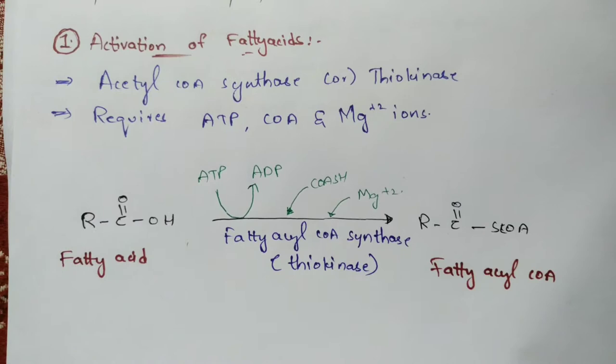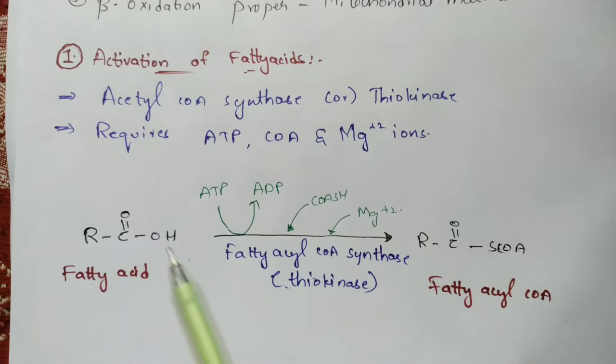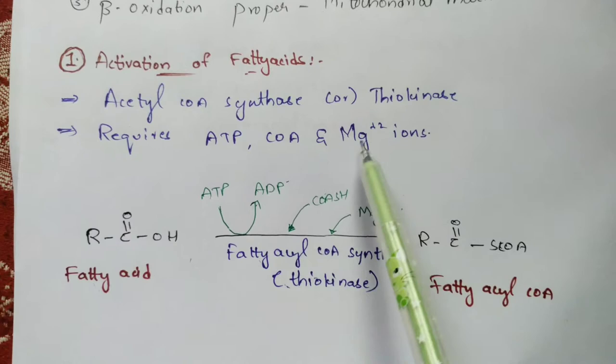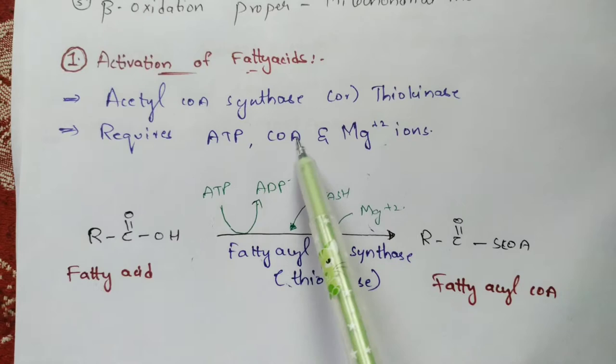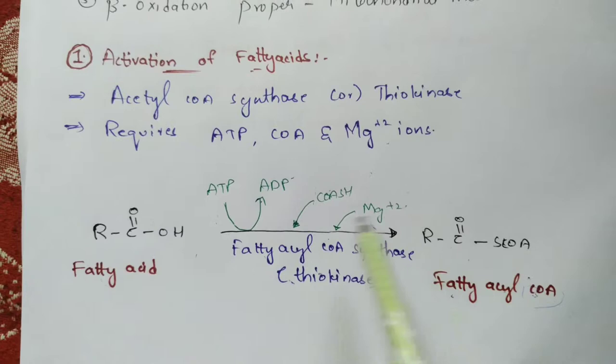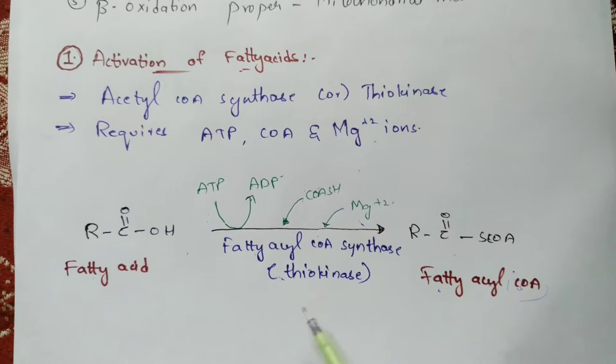This activation of fatty acid requires ATP, coenzyme A, as well as magnesium ions (Mg²⁺). The fatty acid, by utilizing the enzyme fatty acyl-CoA synthetase or thiokinase, reacts with ATP and coenzyme A along with magnesium ions. The OH group gets liberated out and forms the CoA group, producing fatty acyl-CoA. In this way, the activation of the fatty acid takes place — the fatty acid gets converted to fatty acyl-CoA.